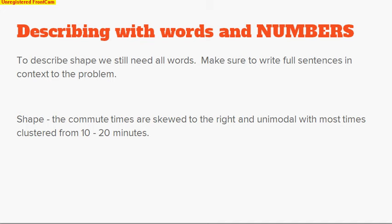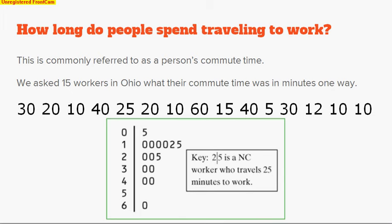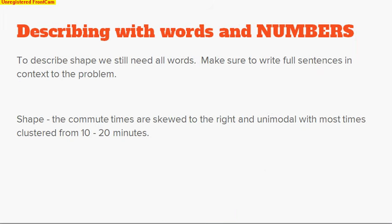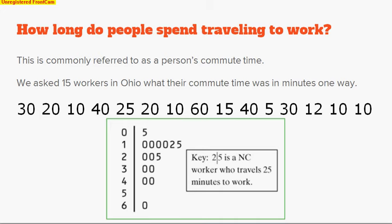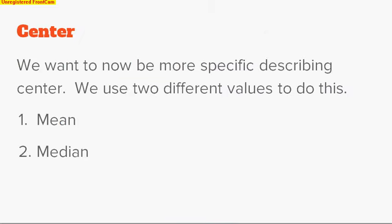First, to talk about shape, we're still going to have to use words. So make sure to write full sentences in context to the problem. What I would say about the shape is: the commute times are skewed to the right and unimodal, with most times clustered around 10 to 20 minutes. If I tilt my head, I definitely see that more data is towards the lower numbers than the higher numbers. That's why I said skewed to the right. And most of the data is clustered in the 10s and 20s. I even use the word unimodal because in the 10s we definitely see where there's a huge chunk of data.